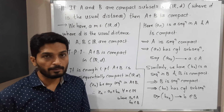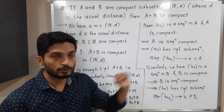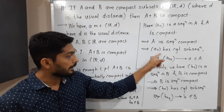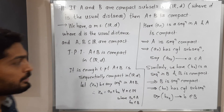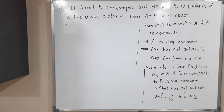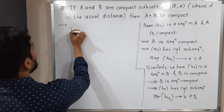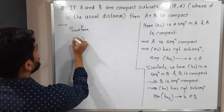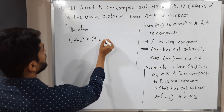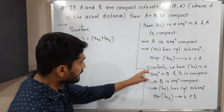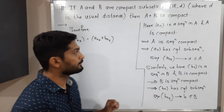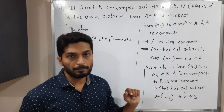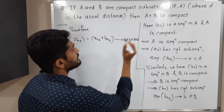So, Zn is made up of two sequences aₙ and bₙ. We got that aₙ has a convergent subsequence: aₙₖ converges to a. And bₙ has a convergent subsequence: bₙₖ converges to b. Therefore we have a subsequence Zₙₖ, where Zₙₖ equals aₙₖ plus bₙₖ, which converges to a plus b. Since a is in A and b is in B, a plus b belongs to A plus B.